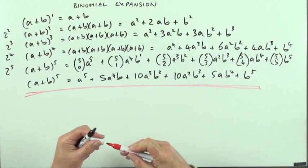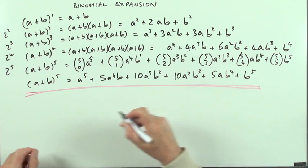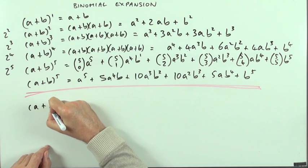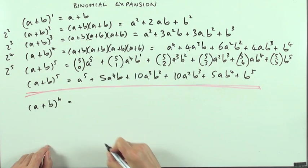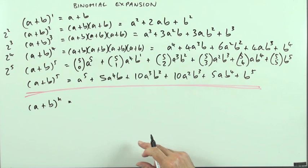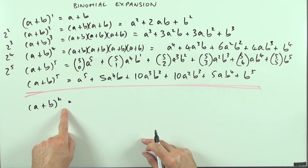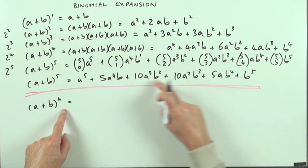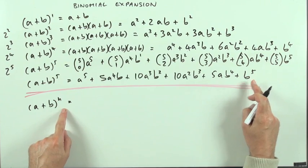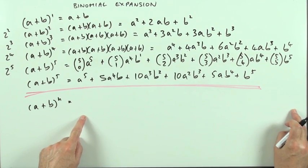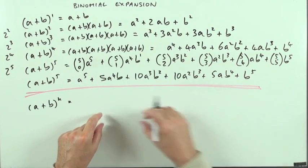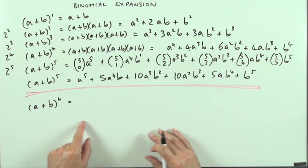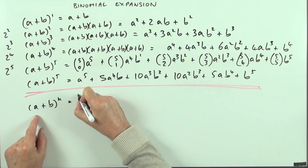Now those were just particular cases. What about the general case — (a + b) to the power n? That's not going to be quite so easy to write out, because with 5 I had 6 terms. With n, I don't know how many terms I'm going to have — well, I know it's n + 1, but I certainly can't space it all out on the board here.